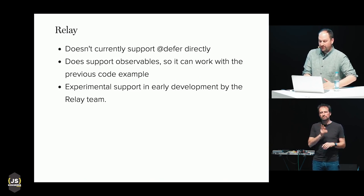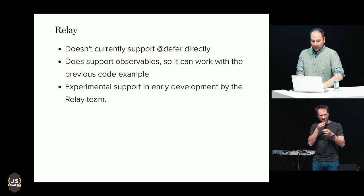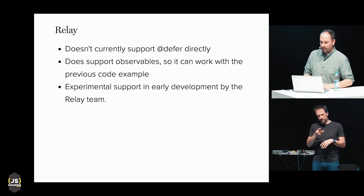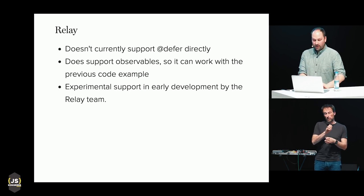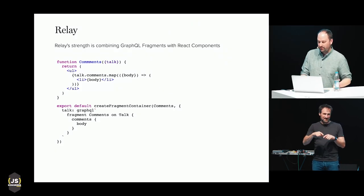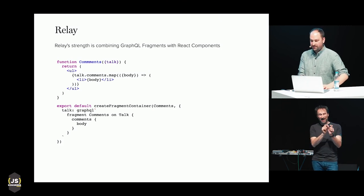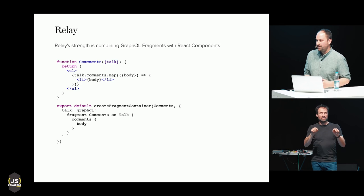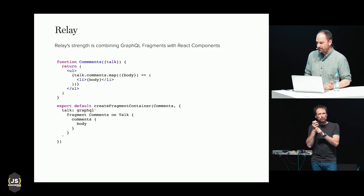Relay is another popular GraphQL client, open-sourced by Facebook shortly after the GraphQL spec was released, and it's what we use at First Dibs. Relay currently doesn't support the deferred directive but does support subscriptions and observables, so you can use the network code I showed to support defer — but you won't be able to solve the null-or-loading problem until proper support is added. They are working on it. In Relay, you co-locate a GraphQL fragment with a component, and that component has access to only the fields defined in that fragment, giving you high confidence when making changes.